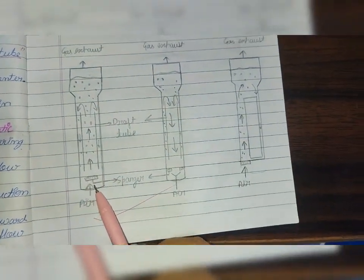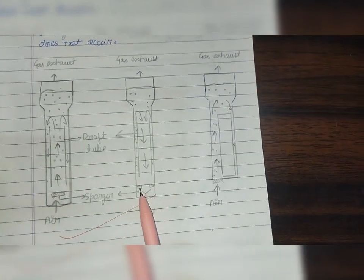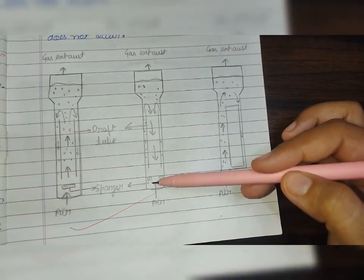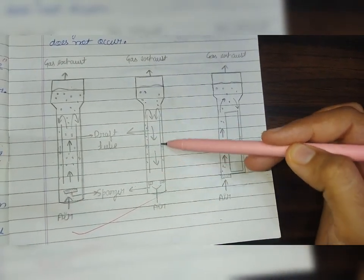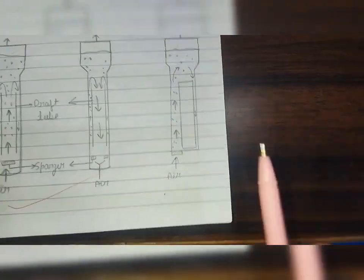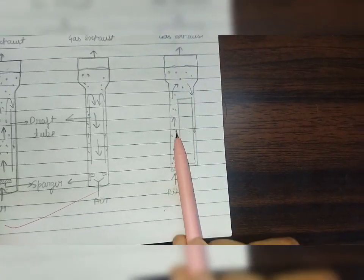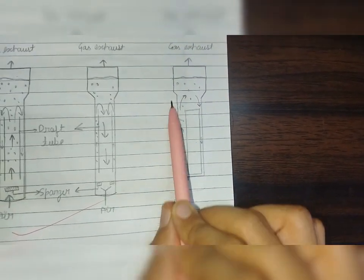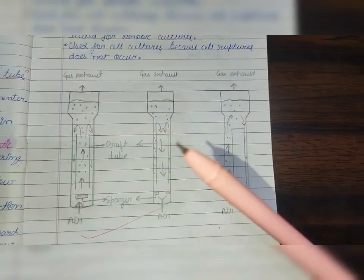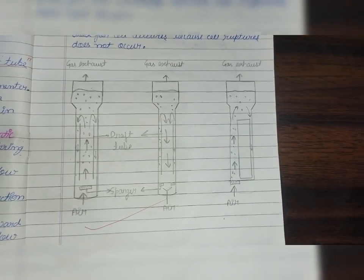The sparger can be presented differently — either it will be placed completely below or alongside the draft tube. The liquid and air get mixed through this arrangement, with the liquid flowing in a circulatory motion. This is your airlift bioreactor diagram and this diagram is very important, so please make sure to draw it.